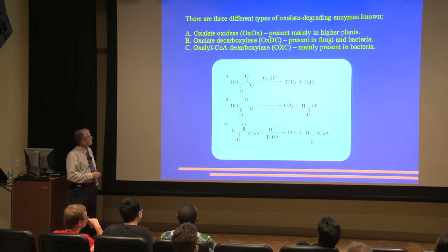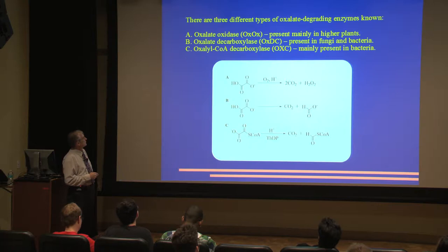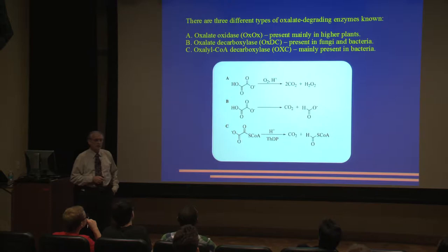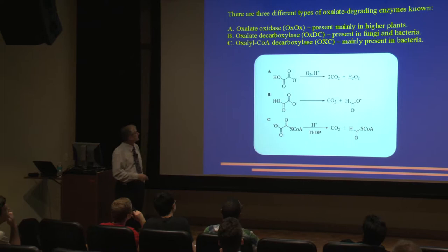If you have too much, the kidneys can't flush it out and it precipitates, giving you kidney stones. There are three types of oxalate degrading enzymes. Oxalate oxidase is mainly in higher plants; the enzyme germin is used for germinating seeds.